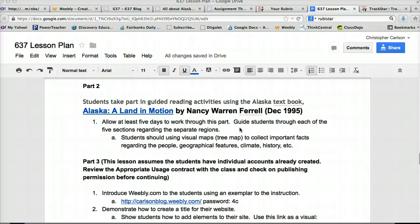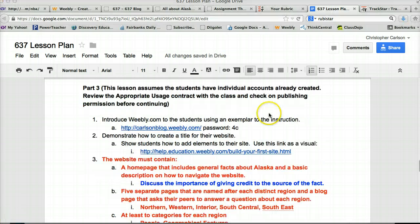But until then, we have a textbook called Alaska Land in Motion. It's a wonderful book. It's written by Nancy Farrell. You kind of have to allow quite a bit of time for kids to become familiar with all the different regions. Along with this wonderful book and that TrackStar I showed you with all those other websites, they're going to collect important facts regarding the people, geographical features, climate history, and any other subtopic we can choose.